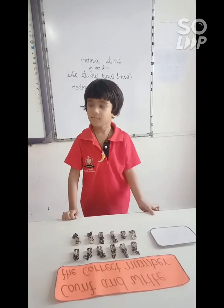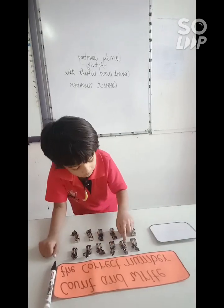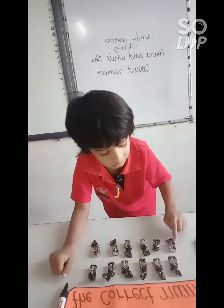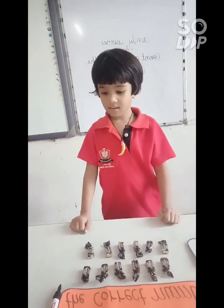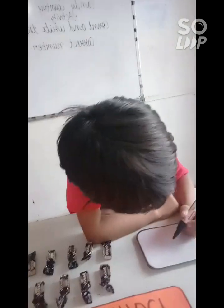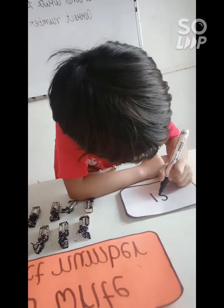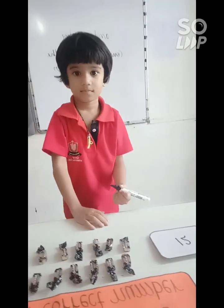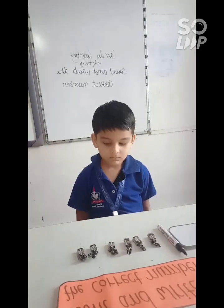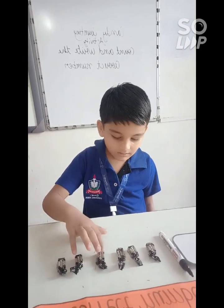Kashvi, now count the candies. 1, 2, 3, 4, 5, 6, 7, 8, 9, 10, 11, 12. Okay, now write the number in the box. How to write 12? 1, 2. 1, 2, 3, 4, 5, 6, 7, 9, 10, 11. Very good.